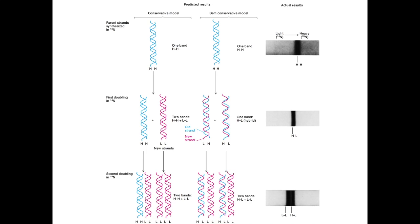When the bacteria go through a second doubling in the light nitrogen, you should see, for both models, two bands. But the types of those two bands are different. For the conservative model, you should see just a heavy band and then just light bands. In the semi-conservative model, you should also see two bands, but heavy-light bands and light-light bands. And that's what they got in their actual results. So this is how they proved the semi-conservative model of DNA replication.